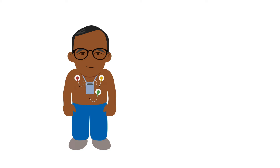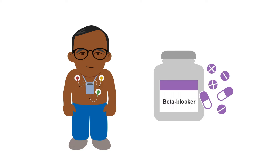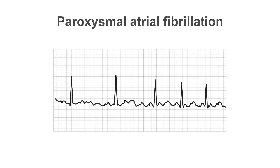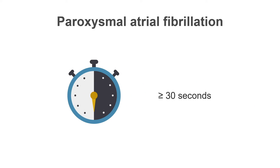In persistent atrial fibrillation, Holter monitoring can provide valuable information about ventricular rate — for instance when we want to assess the effectiveness of rate-controlling medications such as beta blockers. Atrial fibrillation can also be paroxysmal. By convention and in accordance with published guidelines, we only label an episode as a paroxysm of atrial fibrillation on Holter monitoring if it has lasted for 30 seconds or longer.